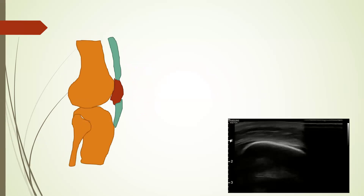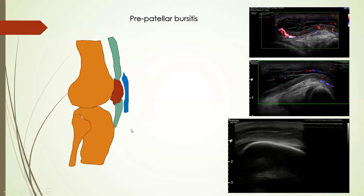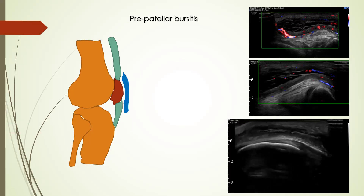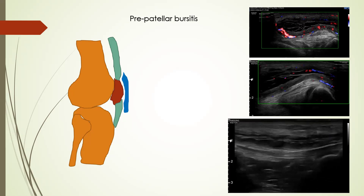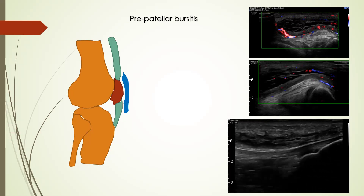The most common pathology in the extensor compartment is pre-patellar bursitis, which is basically distension of the adventitial bursa located in the subcutaneous plane anterior to the patella and the patellar tendon. These still images show distension of the pre-patellar bursa surrounded by thickening with increased vascularity, and this video shows distension of the pre-patellar bursa leading to pre-patellar bursitis. It occurs because of constant friction in this region.